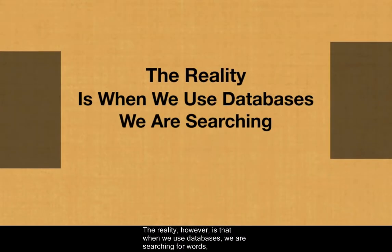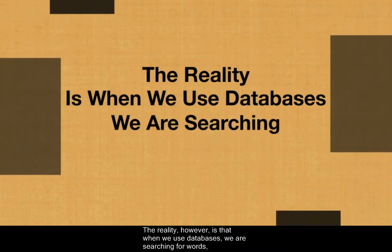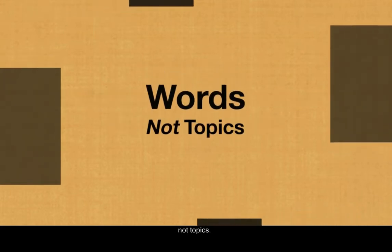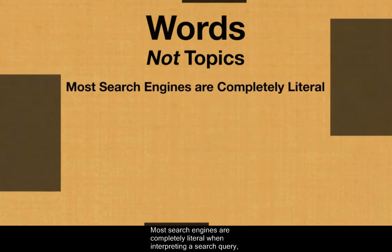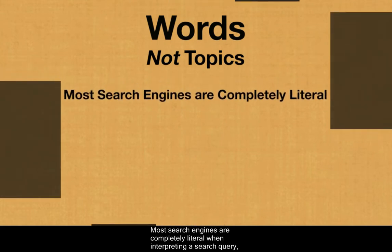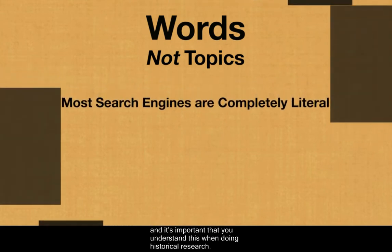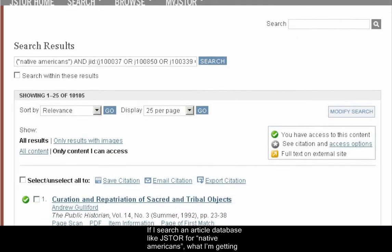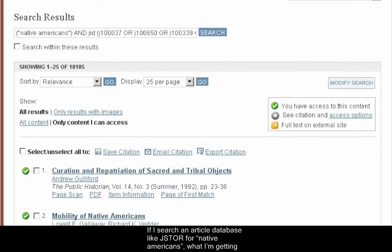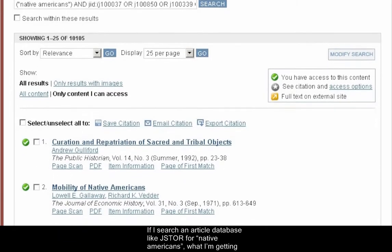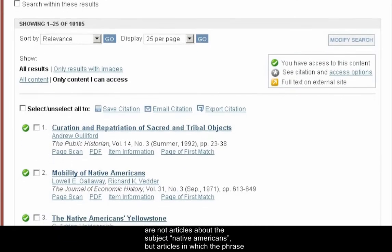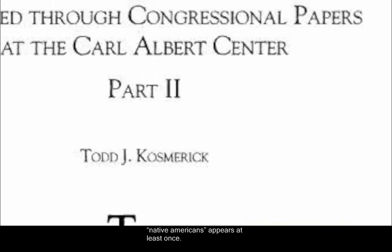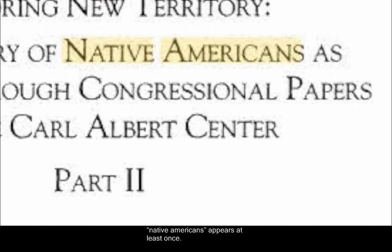The reality, however, is that when we use databases, we are searching for words, not topics. Most search engines are completely literal when interpreting a search query, and it's important that you understand this when doing historical research. If I search an article database like JSTOR for Native Americans, what I'm getting are not articles about the subject Native Americans, but articles in which the phrase Native Americans appears at least once.